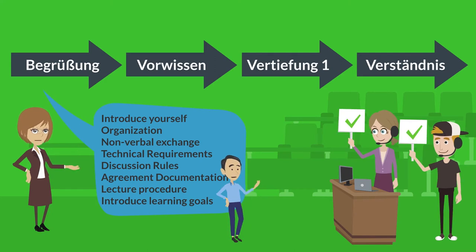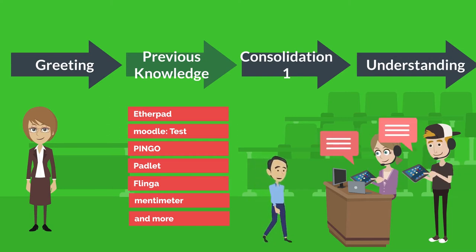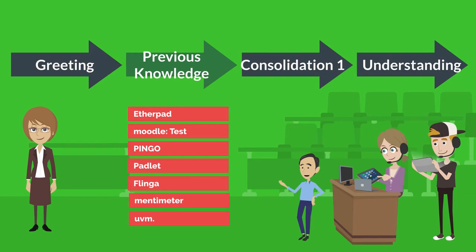The next step for you could be finding out what foreknowledge the students bring with them. Depending on group size there's a variety of methods to do this. In general you could say the smaller the group the more plentiful are your options. How the tools listed here function and are applied properly will be explained elsewhere. We do this so the students feel involved right from the start and that their opinion matters.